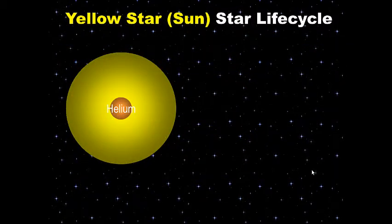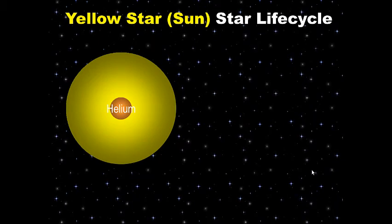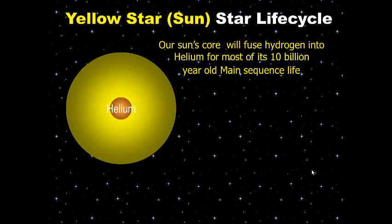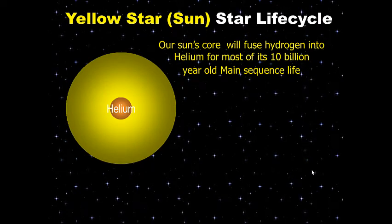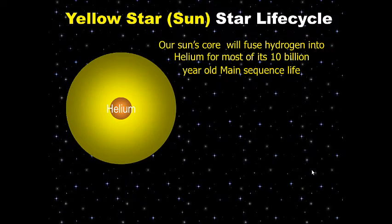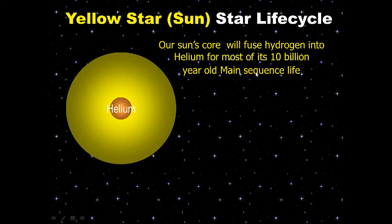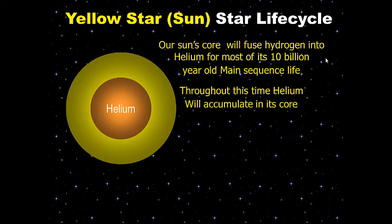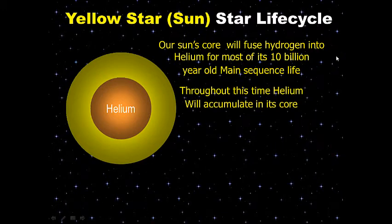Now, our yellow Sun-like star. Right now, our Sun's core is fusing hydrogen into helium, and we get energy — sunlight and radiation. It will do this for its 10-billion-year main sequence life, with another 4.5 billion years to go because it's halfway through its life. Throughout this time, our Sun is accumulating helium in its core.